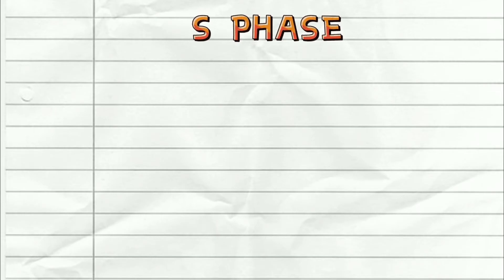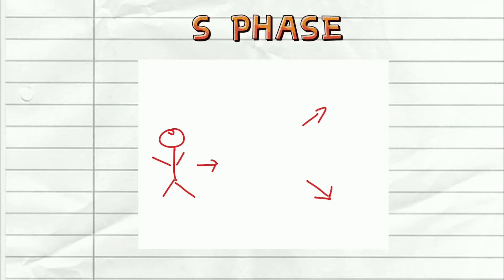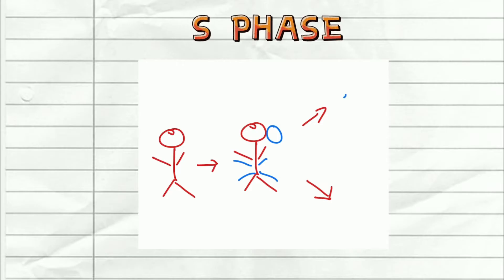Next is S phase, which is actually the most important phase. Imagine a person who wants to split into two — before he does so, he needs to make sure he has two sets of everything: two heads, two pairs of hands, two pairs of legs. So during S phase, it's like this person forming these extra heads, extra hands, and extra legs, so that when he eventually splits, he will retain all the original structure. That's what actually happens at S phase.